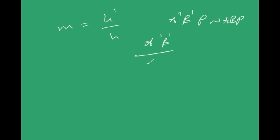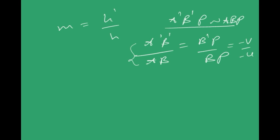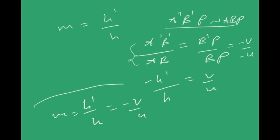Magnification is the ratio of image height to object height, h'/h. Since triangle A'PB' is similar to triangle APB, we have A'B'/AB = B'P/BP. Here B'P = −v and BP = −u, and since A'B' is downward it is −h'. So −h'/h = −v/(−u), giving magnification m = −v/u. This is the magnification formula for spherical mirrors.